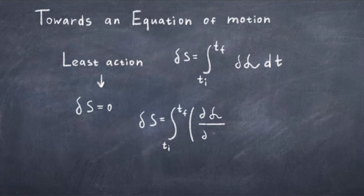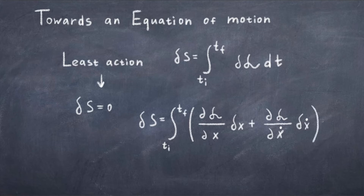The Lagrangian is a function of positions and velocities, so we can split it: delta S equals the integral from t1 to t-final of the derivative of the Lagrangian with respect to the positions times the variation of the position, plus the derivative of the Lagrangian with respect to the velocities times the variation of the velocities, integrated with respect to time. In this notation, x-dot is the velocity and x is the position.